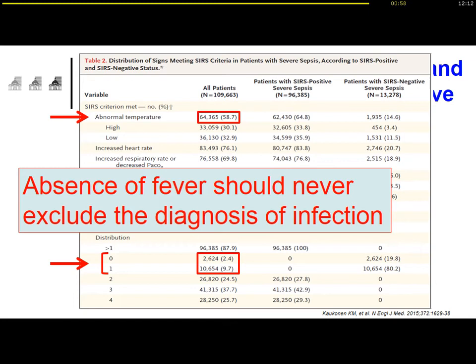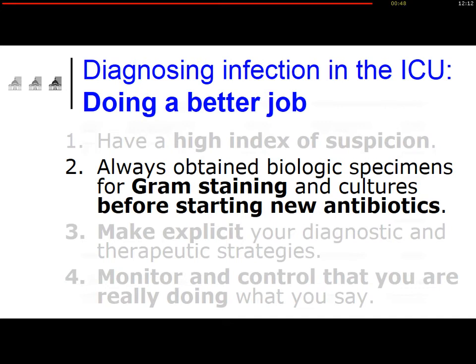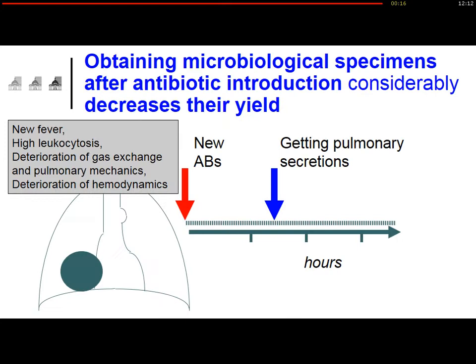The absence of fever should never, never exclude the diagnosis of bacterial infection in the ICU. Always obtain a very good biological specimen for gram-staining and cultures before starting new antibiotics — this is really a take-home message. In many ICUs and hospitals, doctors are starting new antibiotics without having collected a good specimen for the lab, and this is a major mistake. If you start new antibiotics before getting pulmonary secretion, for example, in a patient with clinical suspicion of ventilator-associated pneumonia, it's too late.